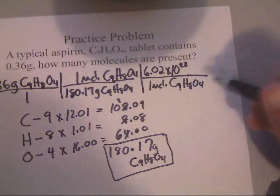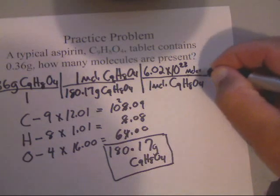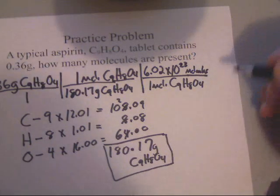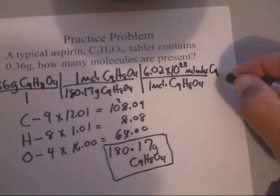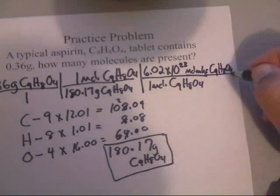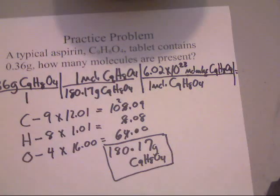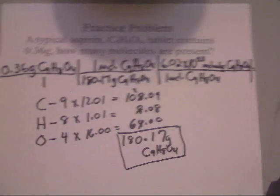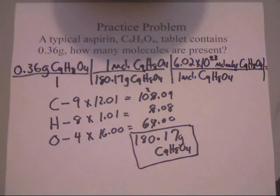And up here is going to be the 6.02 times 10 to the 23rd. And this time, we're dealing with molecules, which are small. So, we'll write molecules of C9H8O4. And after that, you're pretty much done.